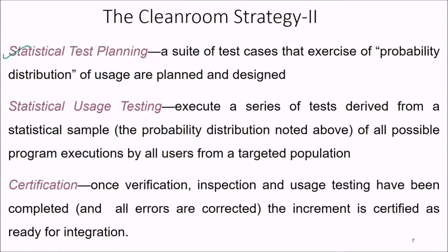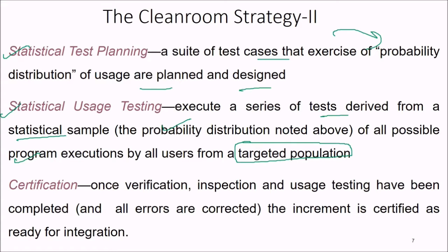Statistical test planning designs a suite of test cases that exercise the probability distribution of usage. Statistical usage testing executes a series of tests derived from a statistical sample of all possible program executions by users from a targeted population. Once verification, inspection, and usage testing are completed and all errors corrected, the increment is certified as ready for integration.